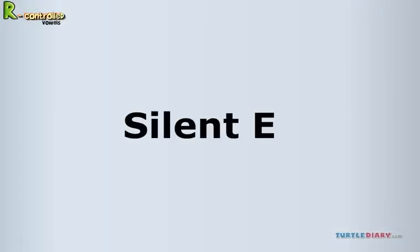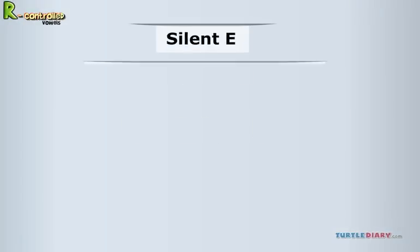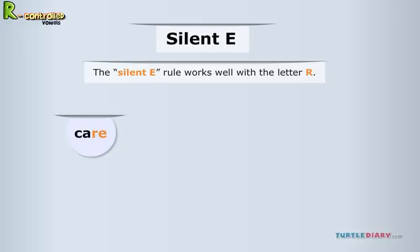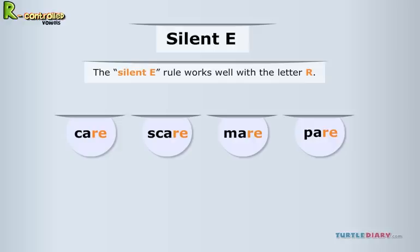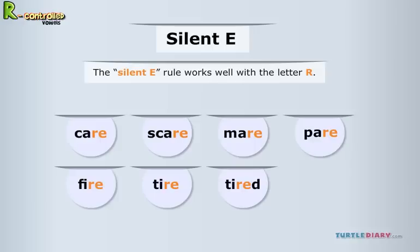Silent E. The silent E rule works well with the letter R. You can see it when you read the words care, scare, mare, and pair. It also works well with the long I, such as the words fire, tire, tired, and wire.